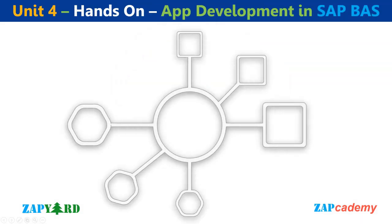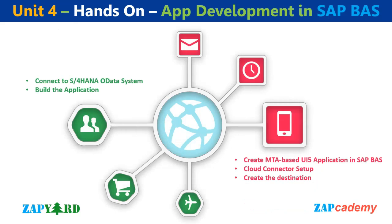After gaining an understanding of SAP BTP and Cloud Foundry fundamentals, we will be equipped to design our first app in SAP Business Application Studio (SAP BAS). Unit 4 will entail a hands-on session where participants will generate an MTA-based SAPUI5 app in SAP BAS. We will set up the cloud connector, establish the destination, and connect to the on-premise S/4HANA OData system. This course aims to give you enough information so you will find it easy to deploy apps on BTP Cloud Foundry.